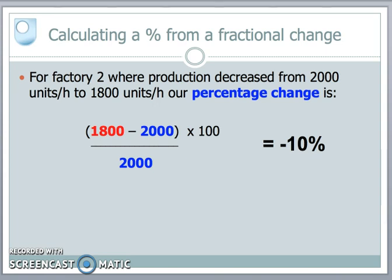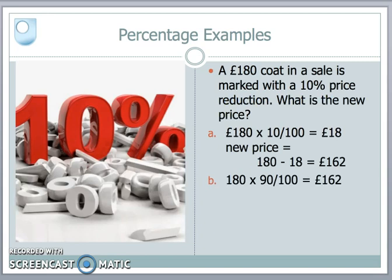We're used to seeing percentage changes on the high street. For example, a coat might cost £180 and the sale price is a 10% reduction. What is the new price? There are two ways to calculate it, both giving the same answer. First, divide the original price by 100 to get 1%, then multiply by 10 to get £18 — that's the reduction. So the new price is £180 − £18 = £162. Alternatively, a 10% reduction means paying 90% of the original price: multiply £180 by 90 and divide by 100, again giving £162.